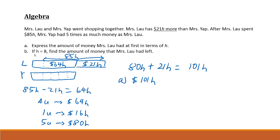Now for Part B: if h equals 8, you are given the value of h. Find the amount of money that Mrs. Lao had left. How many units does Mrs. Lao have left?